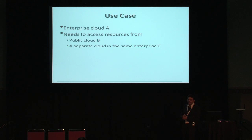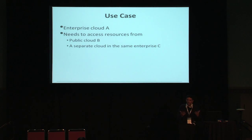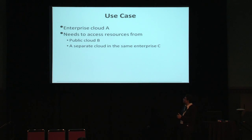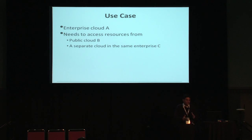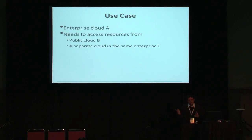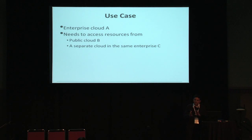The primary use case we're thinking of is where we have an enterprise cloud — it could be a banking company or any other enterprise like HP or IBM — and they need to access resources either in a public cloud like Amazon or Rackspace, the common use case of cloud bursting, or they have a separate cloud within the same enterprise. For example, in IBM India there could be one cloud and in another location another cloud, and they want to access resources transparently across clouds.